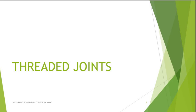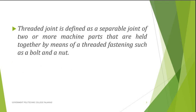Today we are going to discuss threaded joints. First, we discuss the definition of a threaded joint. A threaded joint is defined as a separable joint of two or more machine parts that are held together by means of a threaded fastening, such as a bolt and a nut. The important term here is that it is a separable joint.